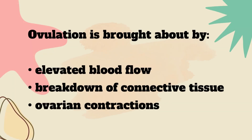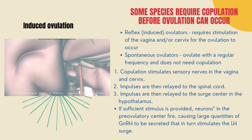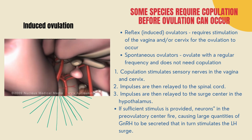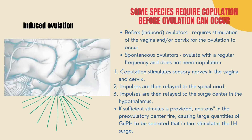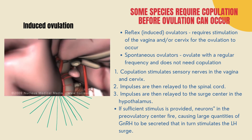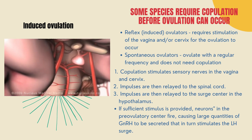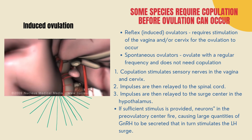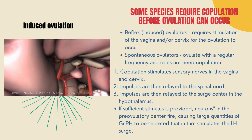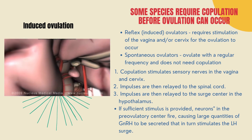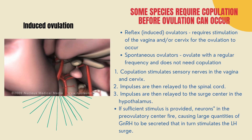Ovulation is brought about by first the elevated blood flow, second the breakdown of connective tissue, and lastly ovarian contractions. Some species require copulation before ovulation can occur. There are two different types of ovulators: reflex or induced ovulators and spontaneous ovulators. Ovulation in spontaneous ovulators occurs on a regular basis without the need for copulation, resulting completely from hormonal alterations. The woman, sow, ewe, mare, and cow are some examples of spontaneous ovulators.